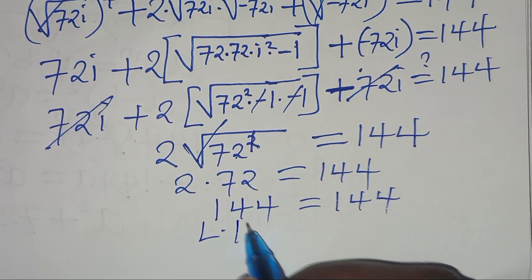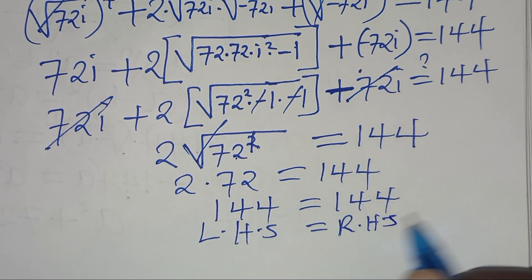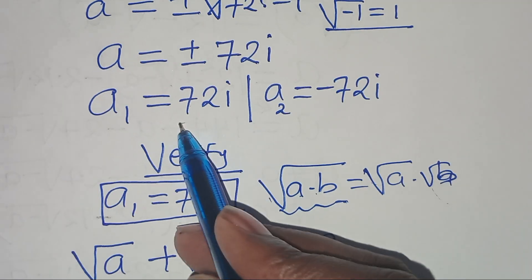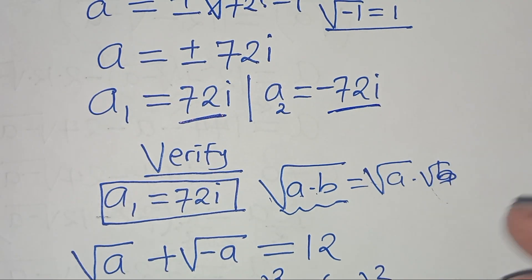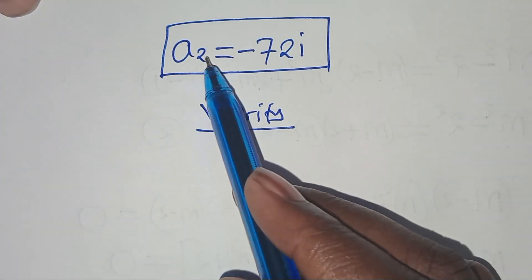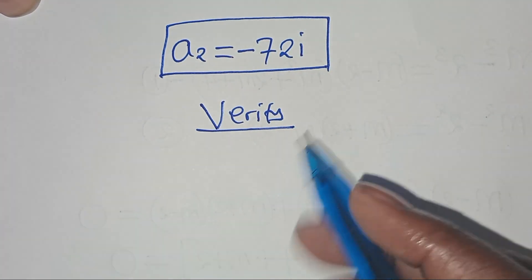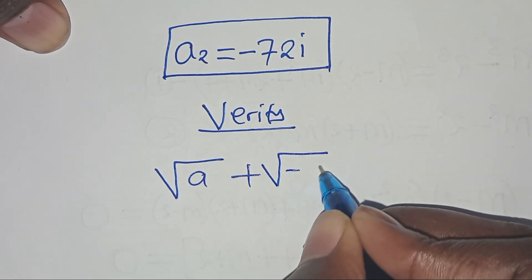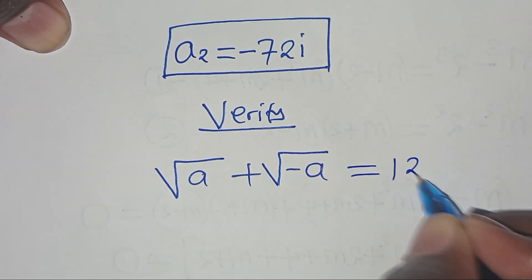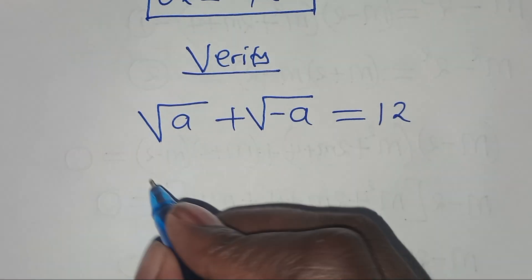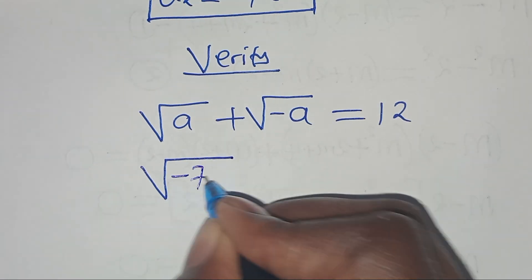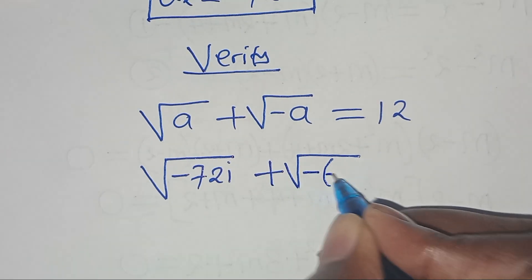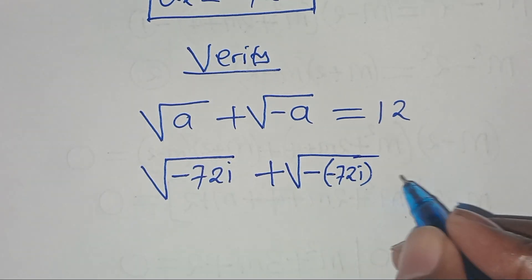This implies the left-hand side equals the right-hand side, so a₁ satisfies the equation. Now let's verify that a₂ = −72i satisfies the equation: √a + √(−a) = 12. Substituting: √(−72i) + √(−(−72i)) = √(−72i) + √(72i) = 12.